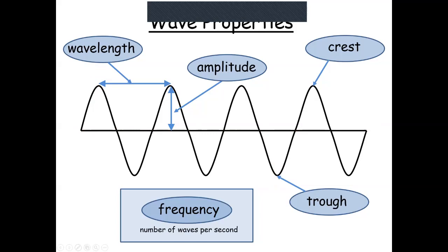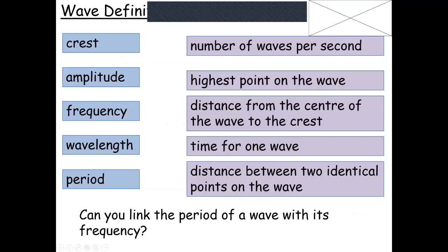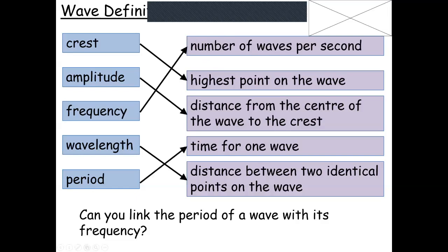The frequency is the number of waves per second. Pause the video now to copy that down. Crest is the highest point. Amplitude is the distance from the center up to the crest. Frequency is the waves per second. Wavelength is the distance between two identical points on the wave. The period — this is where we link it, the extension part — the period is the time taken for one wave, so that's time per wave. Compare that to frequency, which is waves per second. Those two are like opposites — in maths, that's the inverse. The period equals one divided by the frequency.